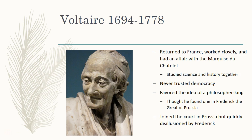So instead of democracy, what Voltaire believed in was the idea of a philosopher king, or an enlightened despot, an enlightened monarch. Basically, he wanted people to be ruled by a king who was wise like a philosopher. How did this king become wise like a philosopher? He would have been trained by philosophers like Voltaire. So this king — or queen even — would be infused with the ideas and goals of the Enlightenment and would become the perfect ruler for a state. This is what Voltaire believed was the perfect form of government.